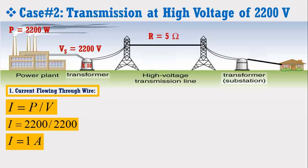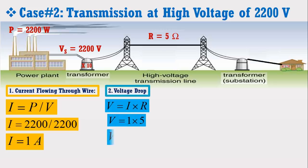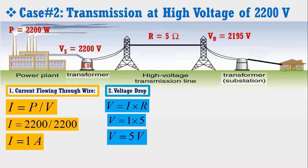Now when we put this value of current in the voltage drop formula, it is noticed that at this high voltage, the transmission line has a voltage drop of only 5 volt. It means that out of 2200 volt, 2195 volt will be reached at the receiving station. At the receiving station, this voltage can be stepped down to 220 volt by using a step-down transformer.